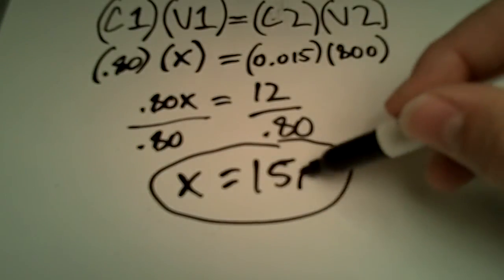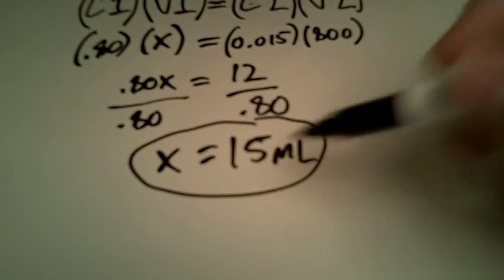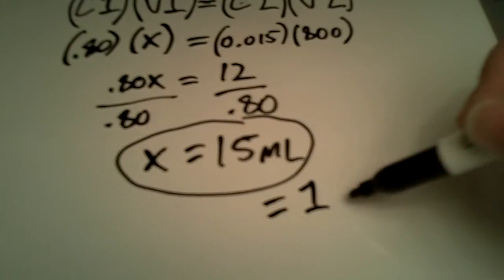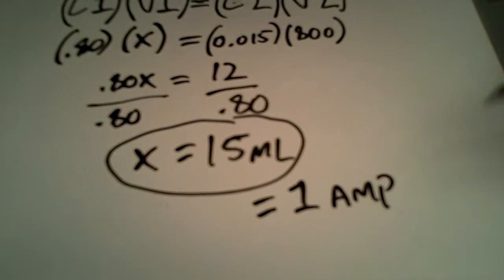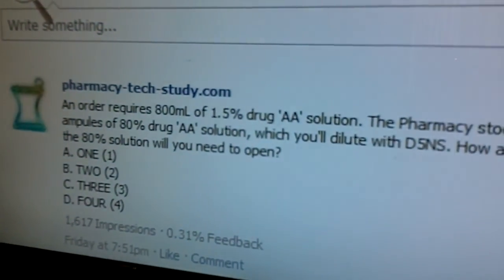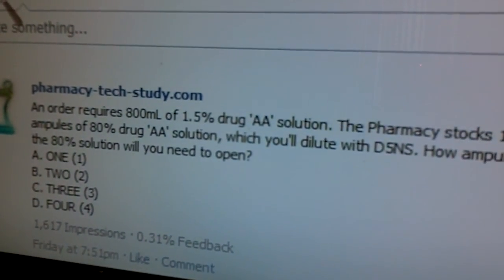That gives us x equals 15 — so that's 15 milliliters, which also equals 1 ampoule. Looking back at the question, answer A is correct: 1 ampoule.